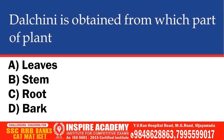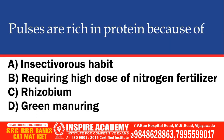Digitalis is obtained from which part of plant? Options: Leaves, Stem, Root, Bark. The correct option is Bark.